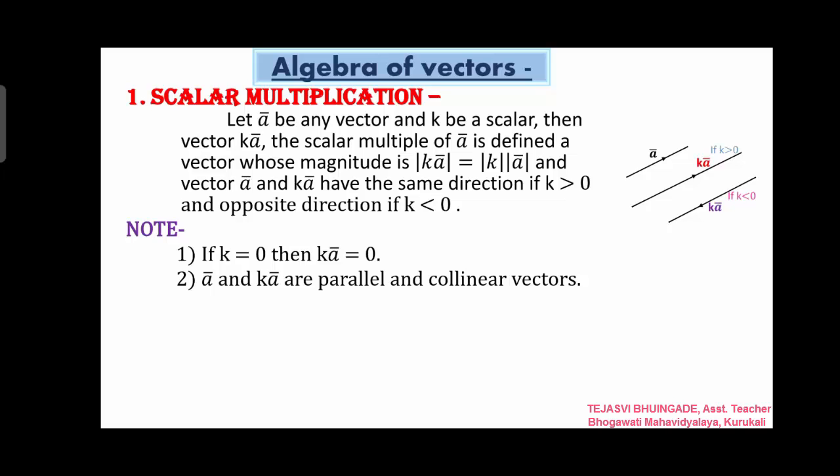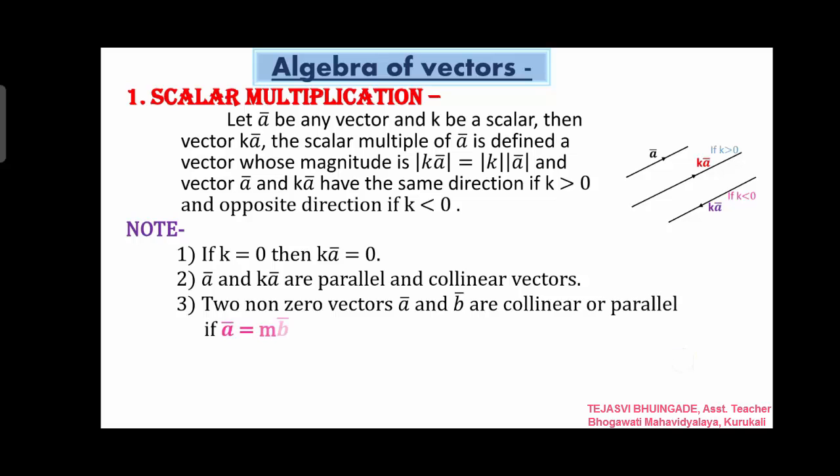The two non-zero vectors are collinear and parallel if ā equals m·b̄, which means two vectors are parallel or collinear then one vector is scalar multiple of the other. If m is a scalar, obviously m is not equal to 0, and ā equals m·b̄, then ā and b̄ are collinear or parallel. So this is the condition for scalar multiplication.